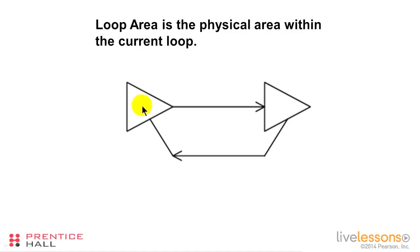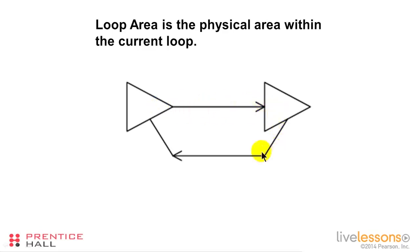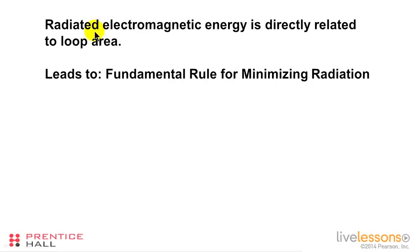If we have a driver and a receiver and a trace, and if the return signal is on the plane directly underneath the trace, then the loop area is relatively easy to define. It's simply the length of the trace times the height above the plane. But every signal has a return, therefore every signal has a loop area. Radiated electromagnetic energy — whether in the form of EMI, crosstalk, transmission lines, or anything else — is directly related to loop area.